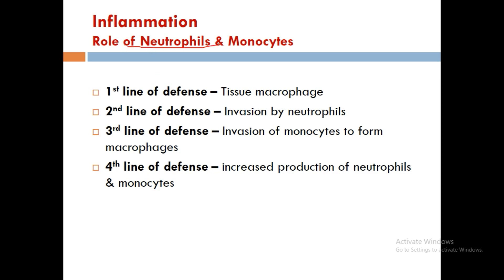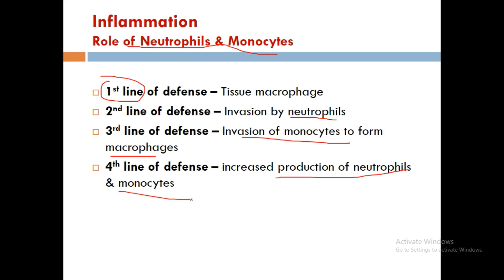Regarding inflammation and the role of neutrophils and monocytes: the first line of defense is tissue macrophages, which react when foreign material such as bacteria enters the body. The second line of defense is invasion by neutrophils. The third line of defense is invasion of monocytes to form macrophages. The fourth line of defense is increased production of neutrophils and monocytes.